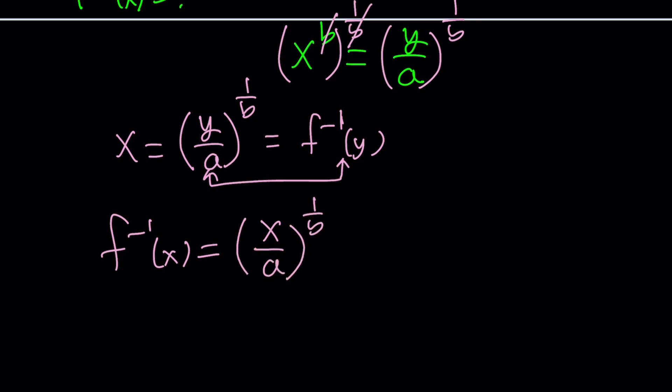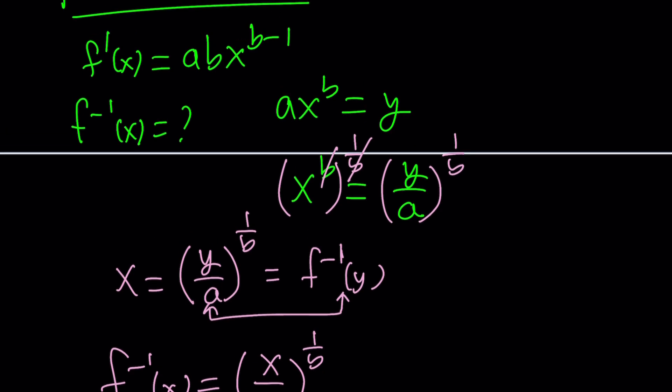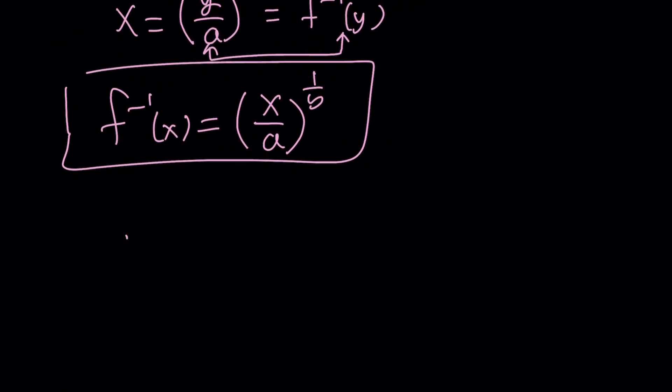We want this to equal f prime. So this is f prime, this is f inverse, and we want them to be equal. Let's go ahead and write an equation. ab x to the power b minus 1 should equal x over a to the power 1 over b.